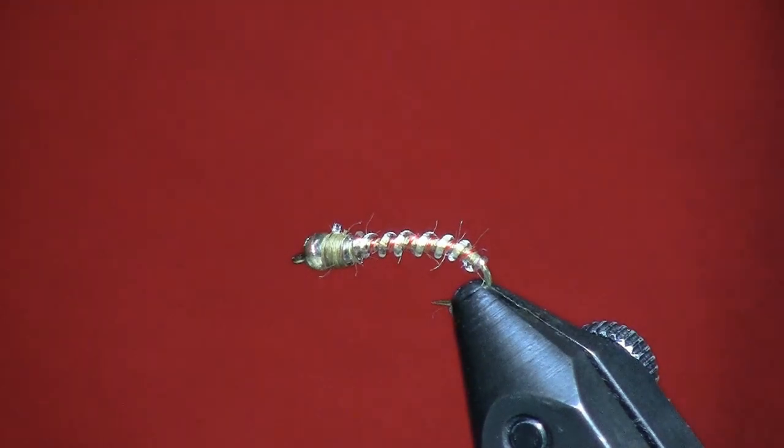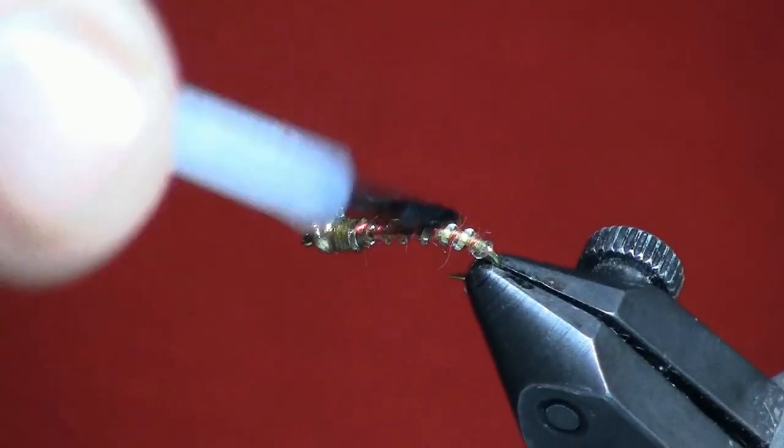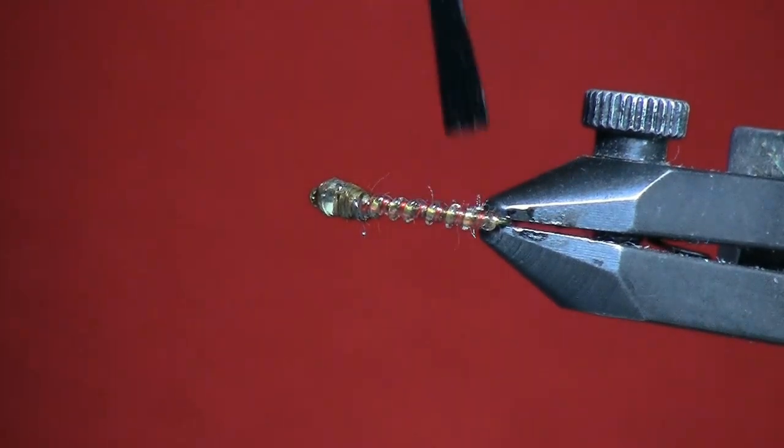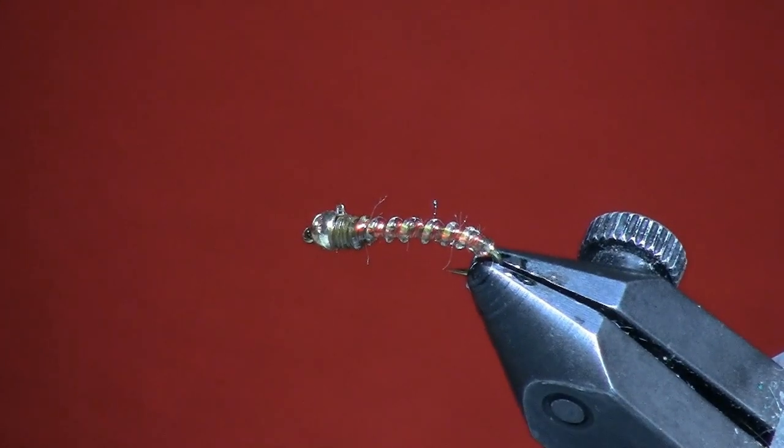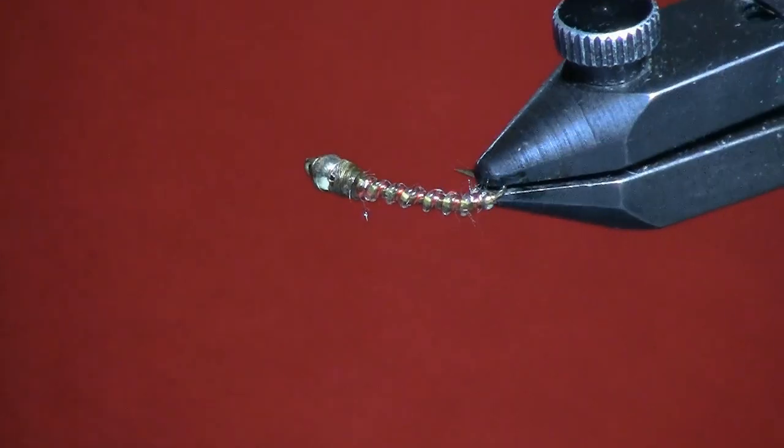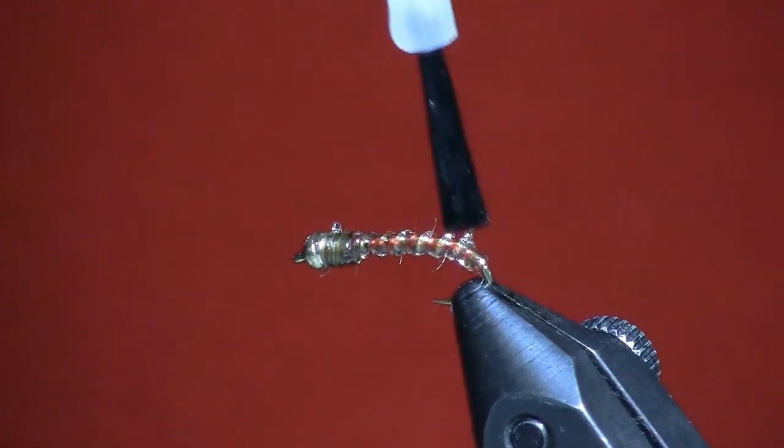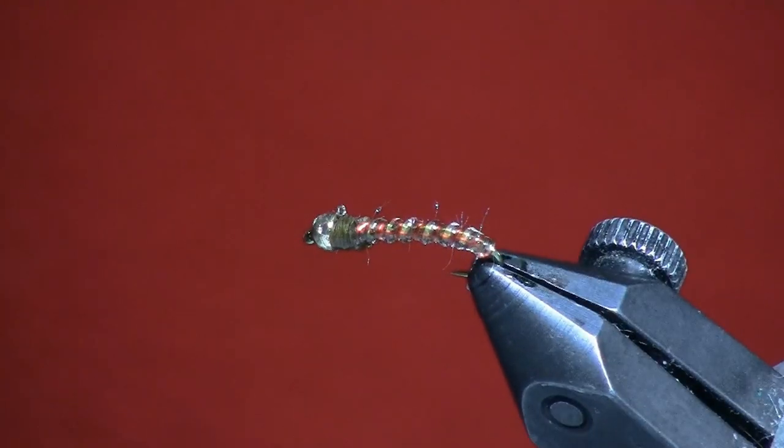And by golly, when you do that, you're going to have a fairly bulletproof fly. And I'll tell you what, unless you're using an awful fine leader or you're chasing after some awfully big fish, you build flies like this and a dozen of them may last you the whole season.